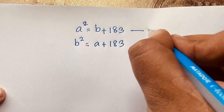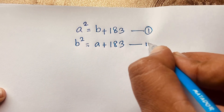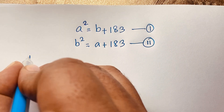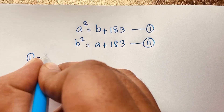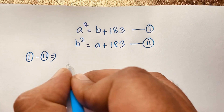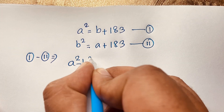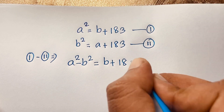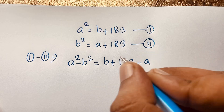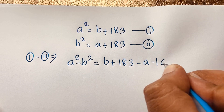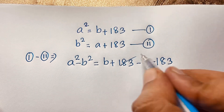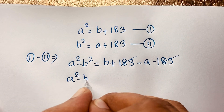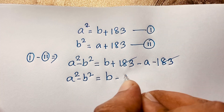Solution: this is our first equation and this is our second equation. First of all, we subtract the first equation from the second equation. So first equation minus second equation gives us a squared minus b squared is equal to b plus 183 minus a minus 183, and the 183 terms cancel out.